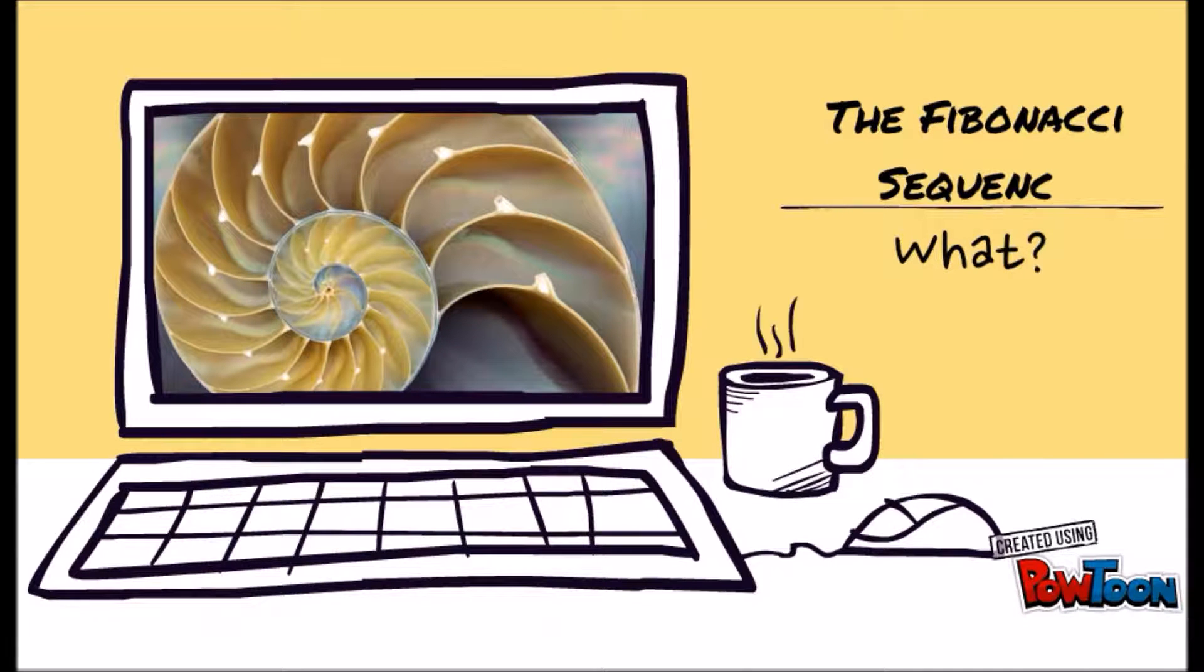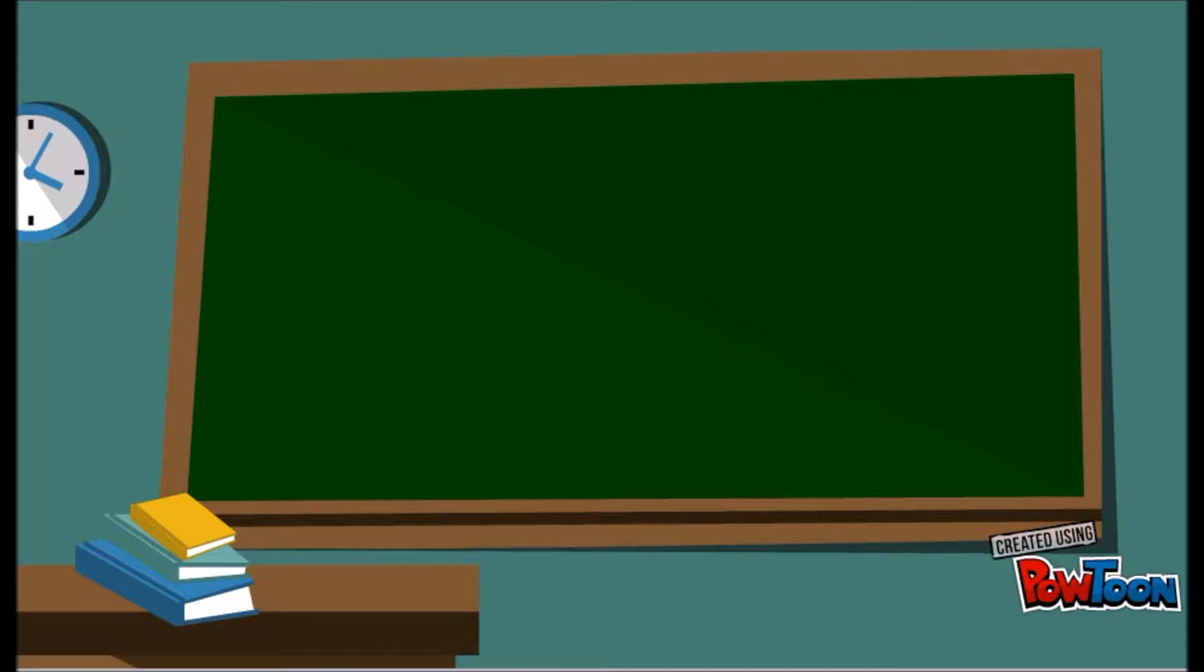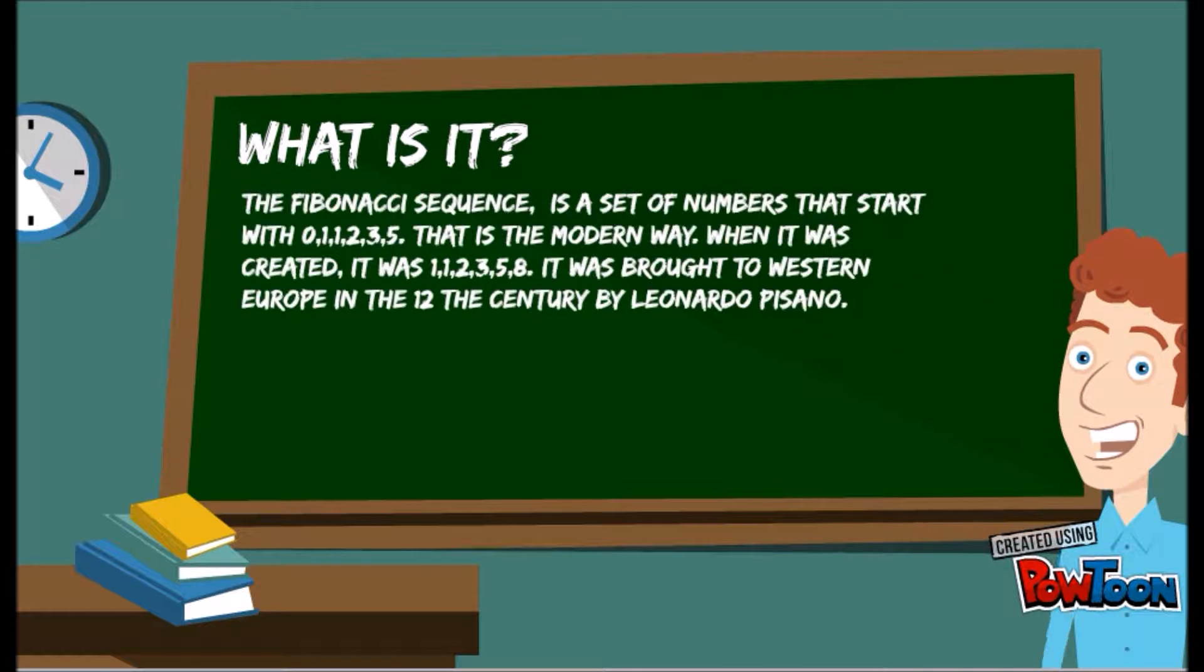The Fibonacci sequence is a set of numbers that start with 0, 1, 1, 2, 3, 5. That is the modern way. When it was created, it was 1, 1, 2, 3, 5, 8.